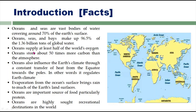Oceans supply at least half of the world's oxygen. Oceans store about 50 times more carbon dioxide than the atmosphere — so 50 times more carbon dioxide goes into the oceans compared to the atmosphere. Oceans also influence the Earth's climate through a constant transfer of heat from the equator towards the poles.